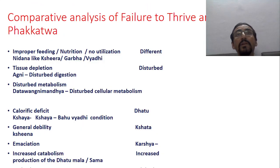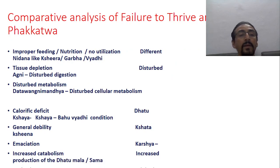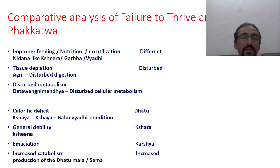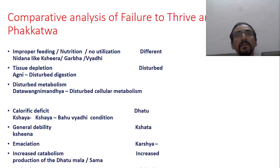Regarding caloric deficit, different words are explained in fakka roga. At some areas the word kshaya is mentioned, sometimes kshata, sometimes bahubyadi. All these things explain that there is a generalized emaciation of the child. The meaning of these different words will be seen in the next slides.